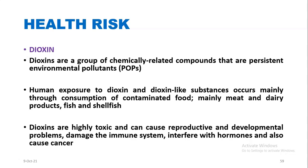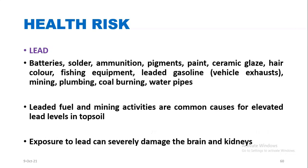Dioxins are a group of chemically related compounds that are persistent environmental pollutants. Human exposure to dioxin and dioxin-like substances occurs mainly through consumption of contaminated food — mainly meat and dairy products, fish, and shellfish. Dioxins are highly toxic and can cause reproductive and developmental problems, damage the immune system, interfere with hormones, and also cause cancer.